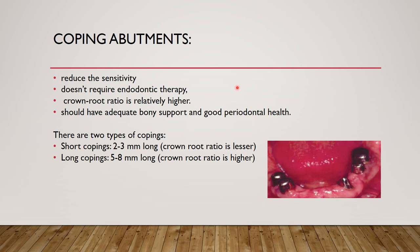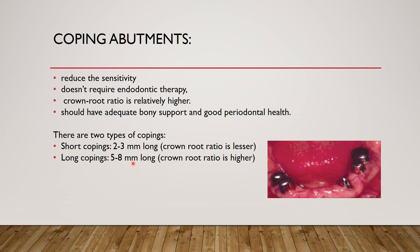Coping abutments: these reduce sensitivity and the tooth does not require endodontic treatment as it is covered with a coping, though this is debatable. The crown-root ratio is relatively higher since the crown is restored again. The surrounding bone and periodontal health must be sound. There are two types: short coping, which is two to three mm, and long coping, which is five to eight mm.